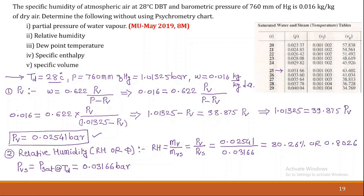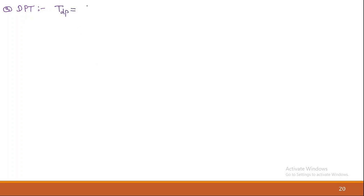Next, point three: dew point temperature (DPT). The dew point temperature is the temperature at which moisture in the air starts condensing. It is equal to the saturated temperature corresponding to Pv — that is, the partial pressure of water vapor.